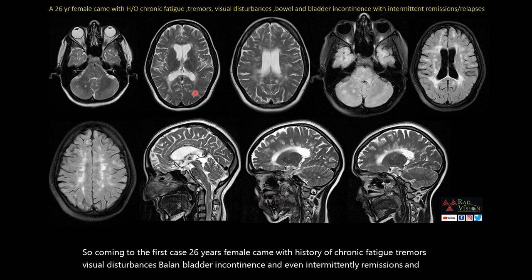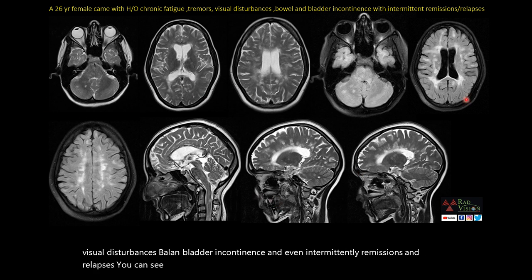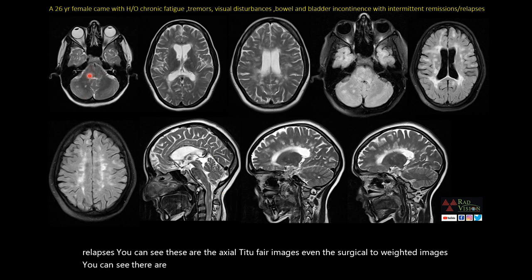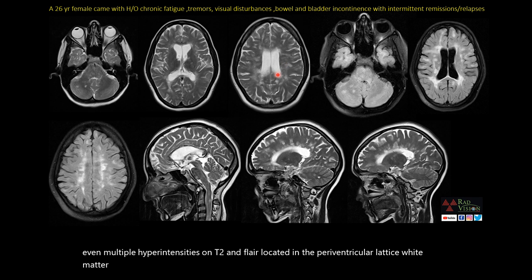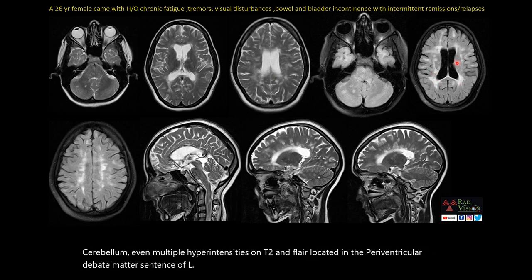You can see these are the axial T2-weighted FLAIR images and the sagittal T2-weighted images. There are multiple hyperintensities noted in the caudal pons, right cerebellum, and multiple hyperintensities on T2 and FLAIR located in the periventricular white matter and along the periependymal surface.